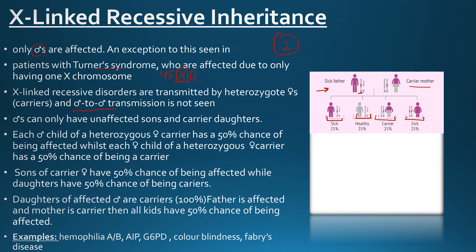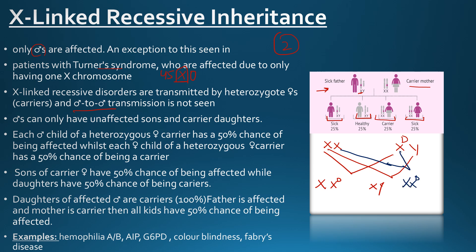Let's learn it with another example. The father is sick or affected whereas the mother is completely normal. This will result in all daughters being carriers and all sons being healthy. The daughters each have only one mutated gene, whereas the sons are completely normal with no mutated gene.